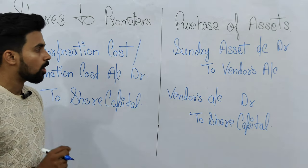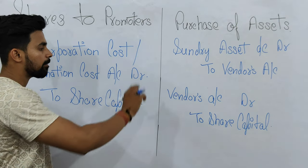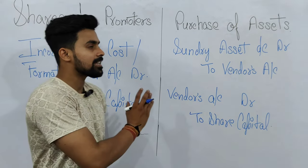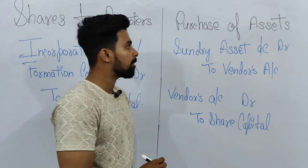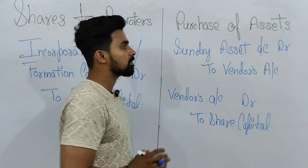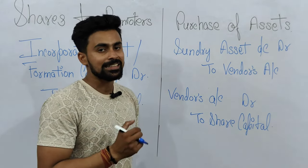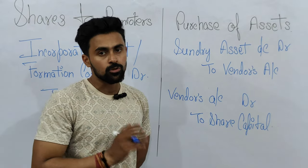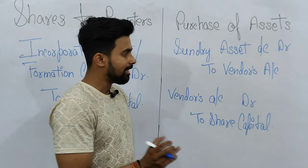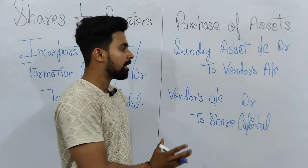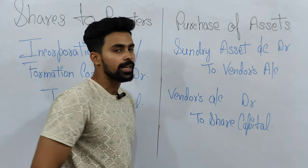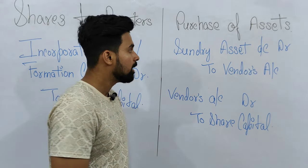The entry for issue of shares to promoters is: Incorporation Cost or Formation Cost account debit to Share Capital. The same amount is written in both the debit and credit columns.